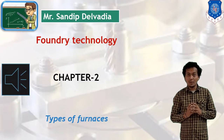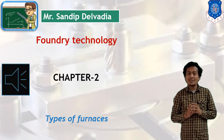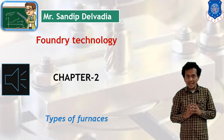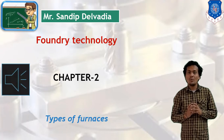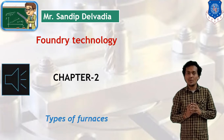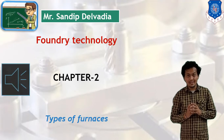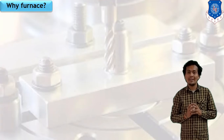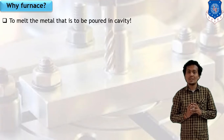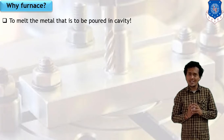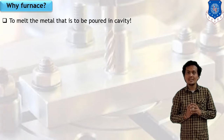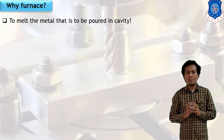Our first step is to convert our metal into liquid form. How can we convert this metal into liquid form? In today's session, we are going to discuss various types of furnaces. Furnaces are used for converting metal into liquid form.